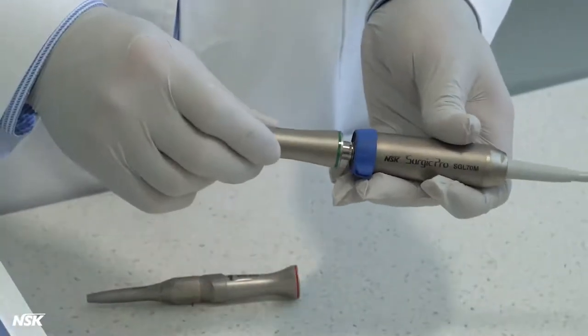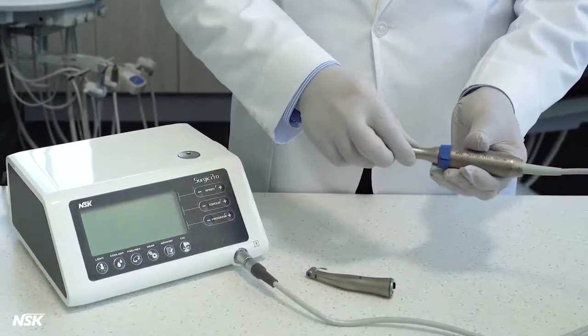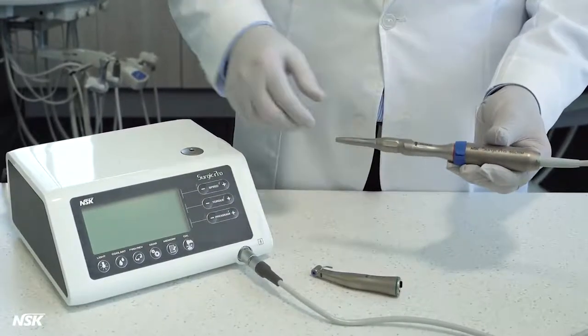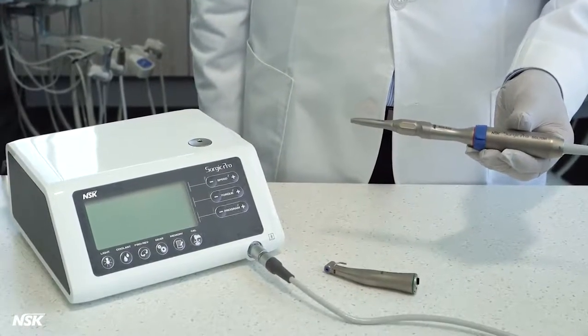Insert the attachment into the motor and twist until it locks in place. Non-optic attachments do not need to be twisted to be locked in. However, microsurgery handpieces will need to be twisted on non-optic motors to be locked in place.